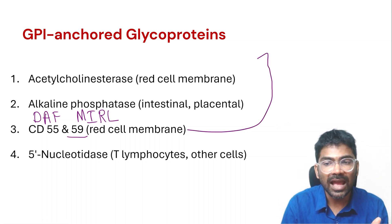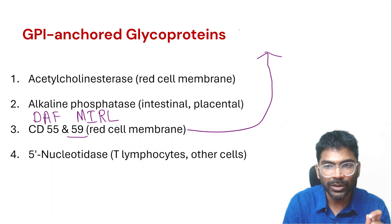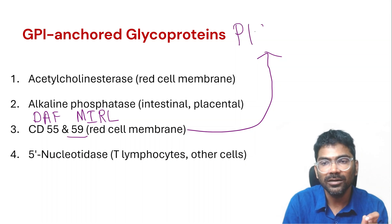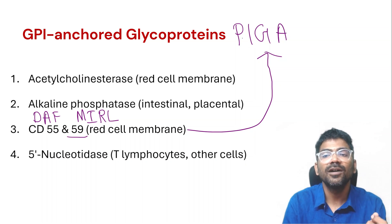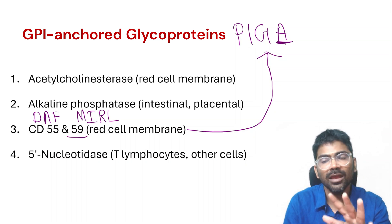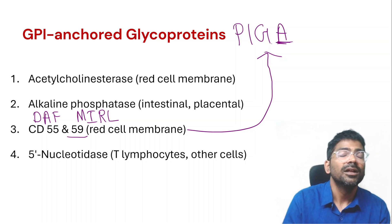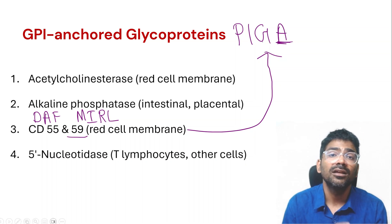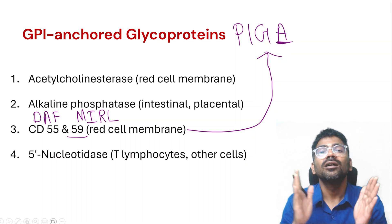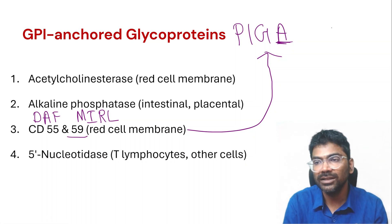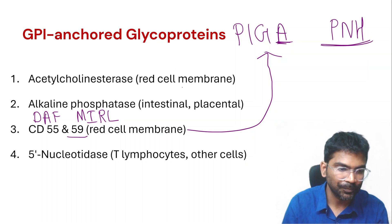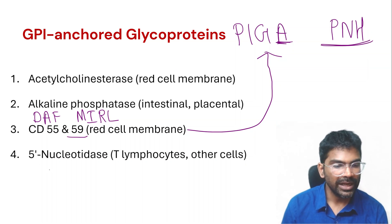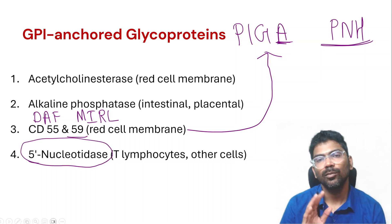The formation of the GPI anchor is carried out by a protein encoded by the PIGA gene — phosphatidyl inositol glycan group A. A defect in the PIGA gene leads to paroxysmal nocturnal hemoglobinuria, which will be discussed in a separate video. 5'-nucleotidase is another example of a GPI-anchored protein.